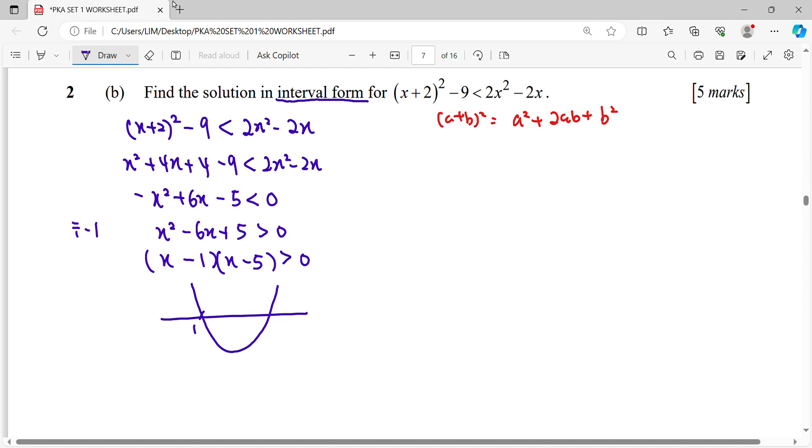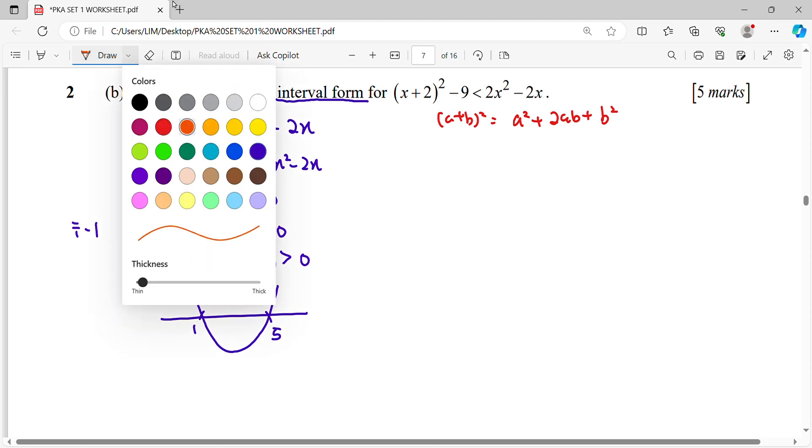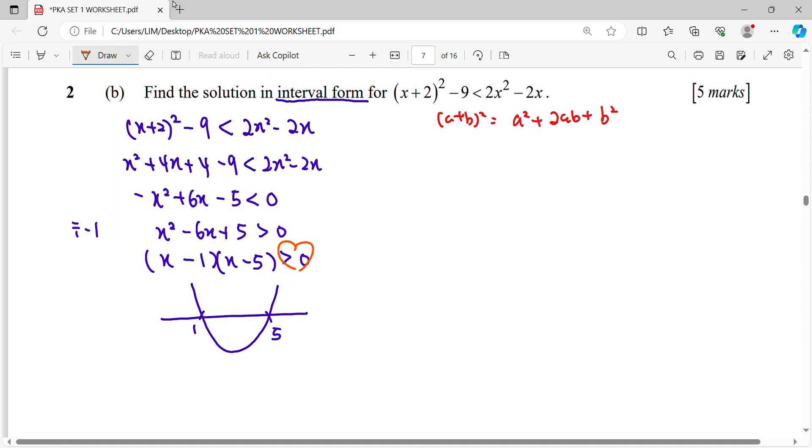So 1 and 5. You want more than 0. More than 0 means positive area. More than 0, positive area.